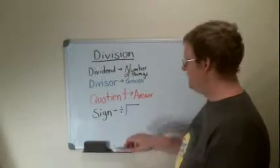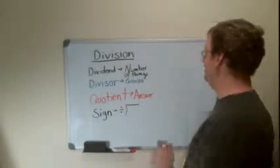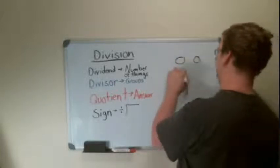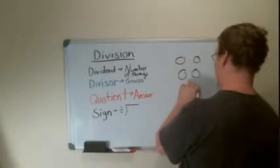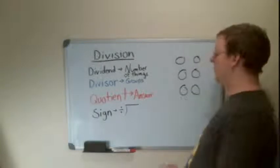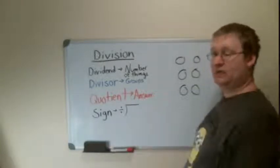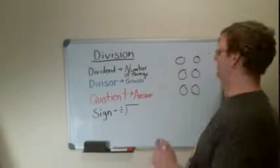Finally, you're going to have your sign. So we take a really basic question, like we have a dividend of six things, or six circles, and we want to divide that into three even groups, or as even as possible.